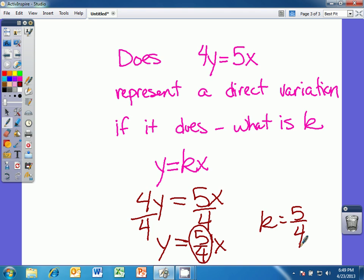And I can go back and check to see if it would make sense if it goes through the origin. If I plug 0 into the original equation, the point 0, 0, so in other words, 4 times 0, does that equal 5 times 0? Yes. So that meets the second criteria for a direct variation function.